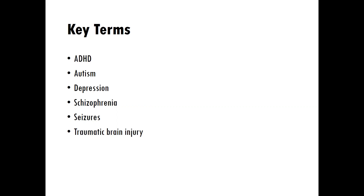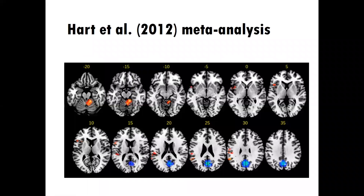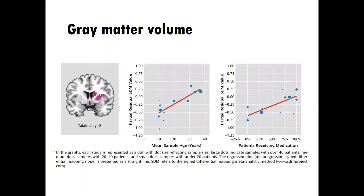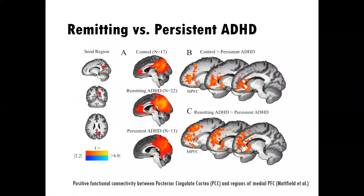We'll look at ADHD, autism, depression, schizophrenia, seizures, and traumatic brain injury. For ADHD, we're going to be looking at meta-analytic data, trying to understand the difference between healthy controls versus people with ADHD. We'll also learn about what happens over the course of the lifespan with ADHD and gray matter volume, and what happens with medication and the role of medication in ADHD treatment. We'll also look at a fascinating insight into remitting versus persisting ADHD and what happens in the brain over time for people who are able to reach remission.